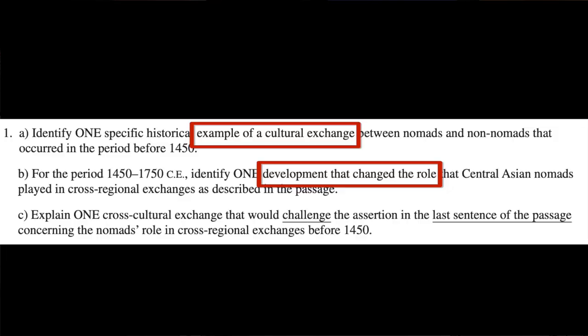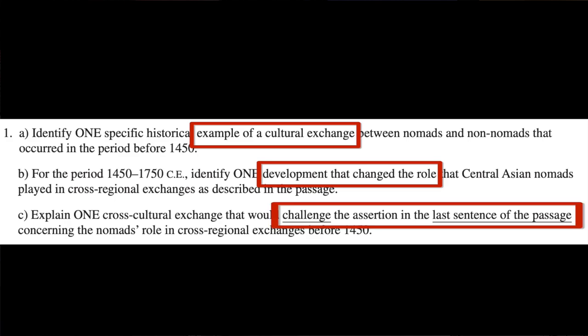For letter C, this one has some pre-underlining — pretty fancy of College Board, they went right in there so you don't have to do it. Explain one cross-cultural exchange that would challenge an assertion in the last sentence of the passage. I love this one. Make sure even if the other sentences are kind of general, that last one you're gonna need. So focus on that one.